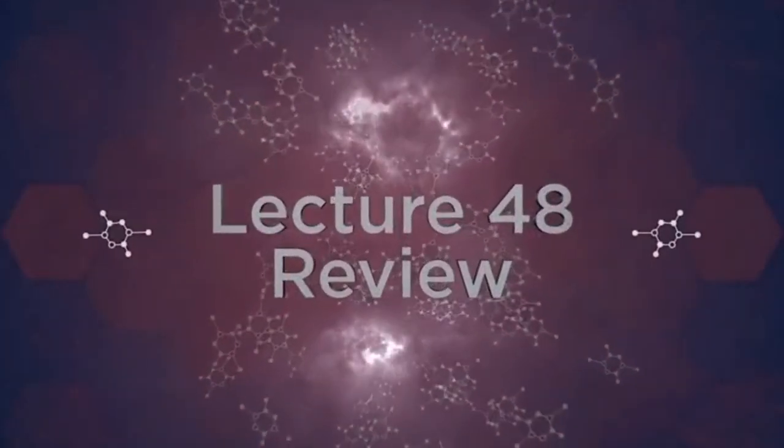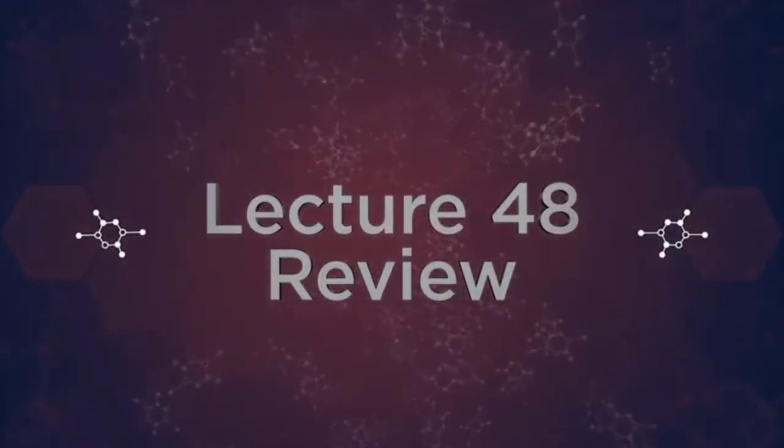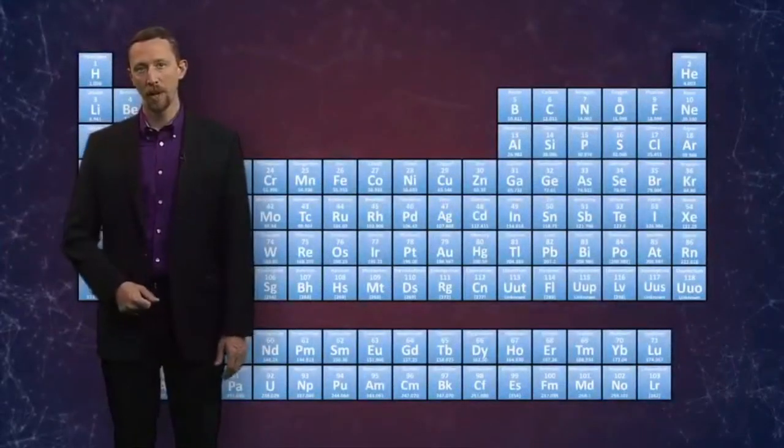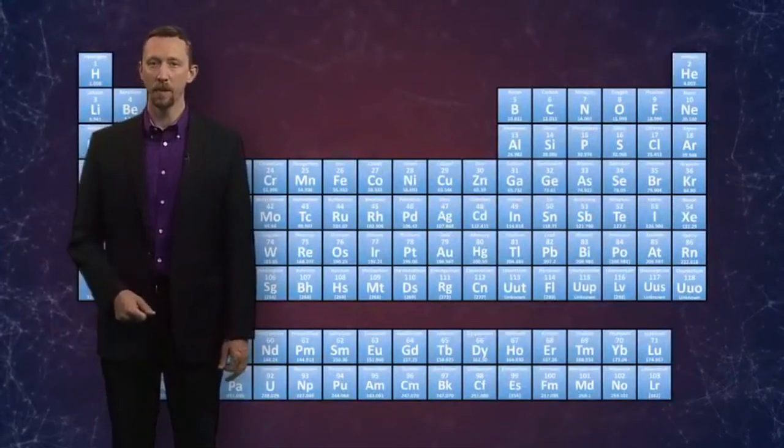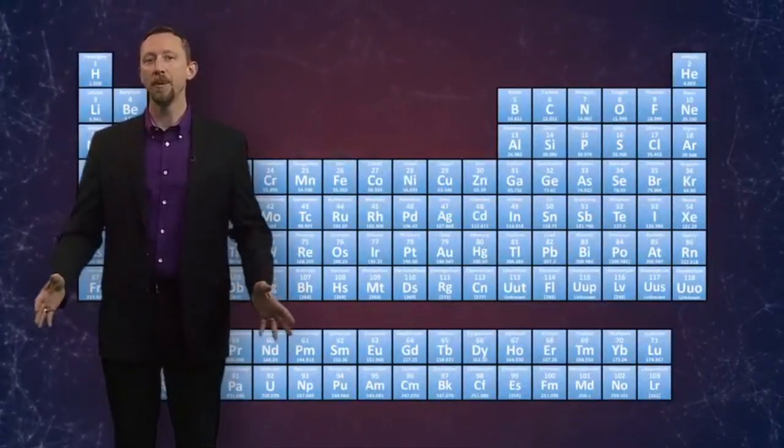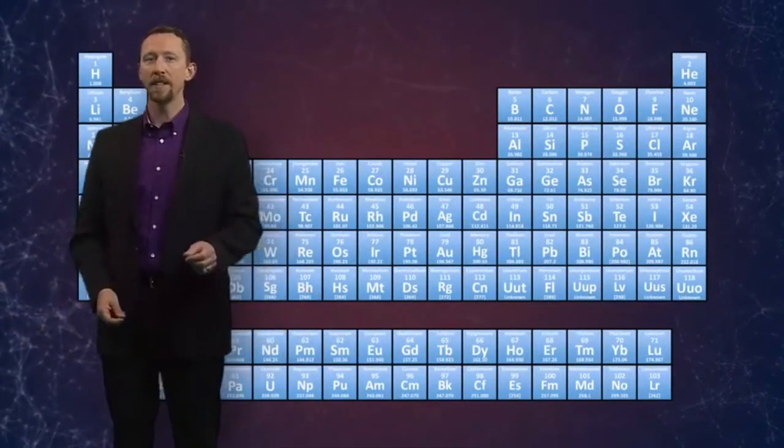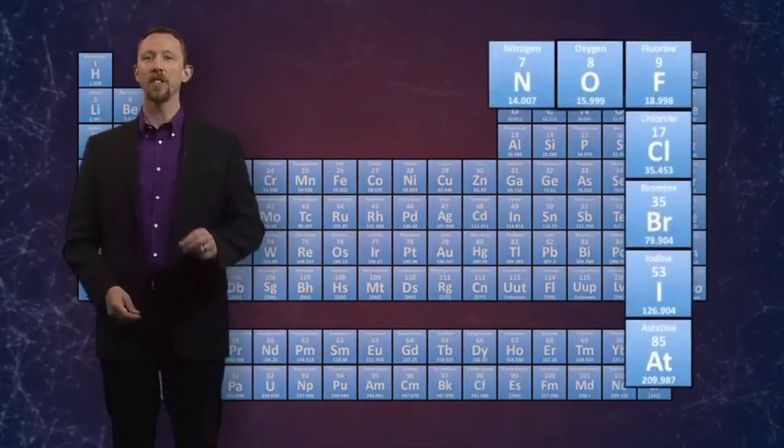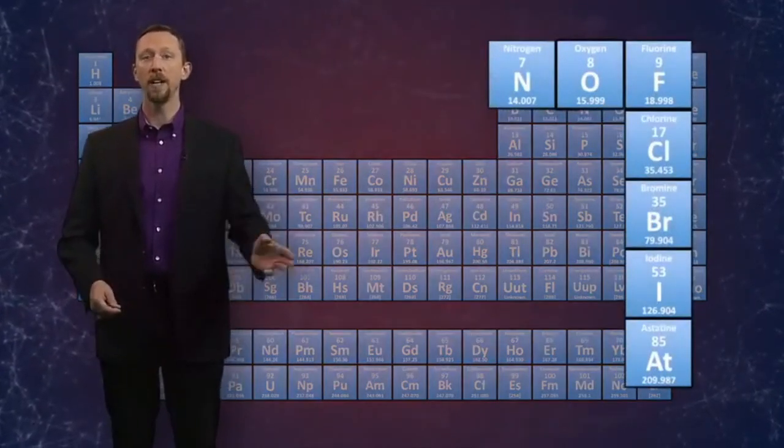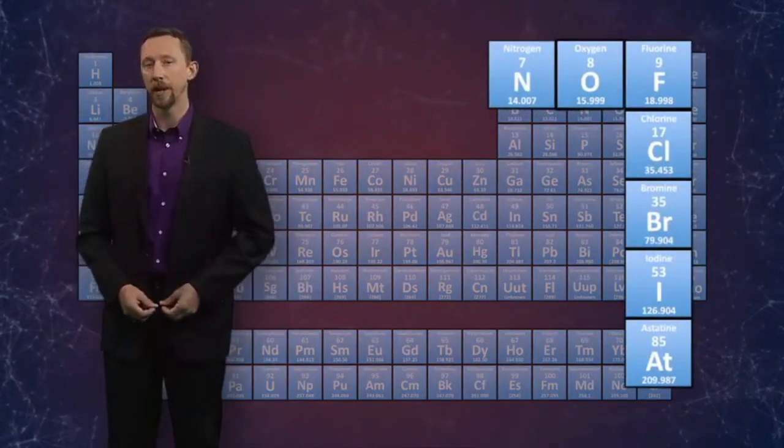But for now, the rest of our course beckons, so we'd better sum up. We started by acknowledging that there's more, much more, to the world of organic chemistry than just hydrocarbons. We acknowledged that just about every element in the periodic table can play a part in the chemistry of carbon-based compounds. But we decided to keep it simple and consider just halogens, oxygen, and nitrogen, and the roles that they can play in tuning the chemistry of organic compounds.